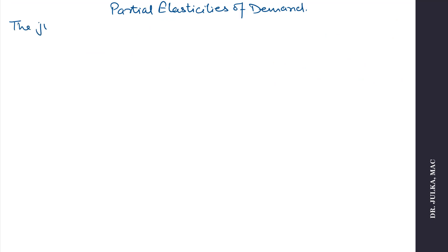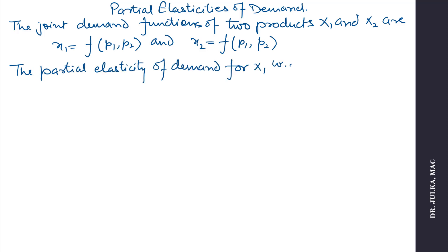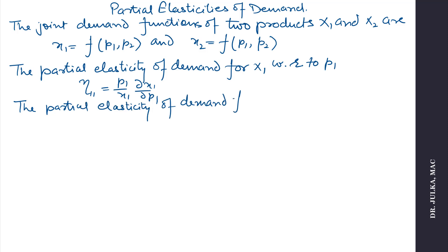Next we talk about partial elasticities of demand. The joint demand function of two products X1 and X2 are X1 = f(P1, P2) and X2 = f(P1, P2), where P1 and P2 are the prices of X1 and X2 respectively. The partial elasticity of demand for X1 with respect to P1, denoted by η11, equals (P1/X1) · (∂X1/∂P1). The partial elasticity of demand for X1 with respect to P2, denoted by η12, equals (P2/X1) · (∂X1/∂P2).